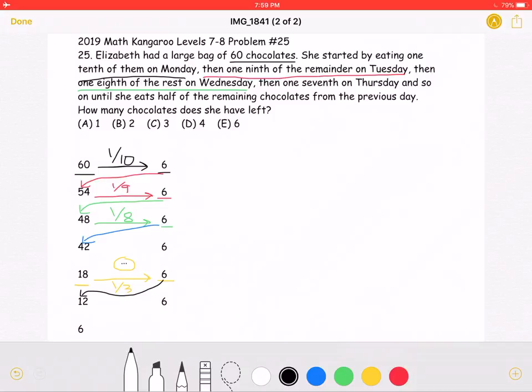The problem states that she continues this pattern until she eats half of the remaining chocolates from the previous day. So here, she has 12 chocolates. And this is the situation the problem was talking about. She has 12 chocolates, and will be eating half of them.